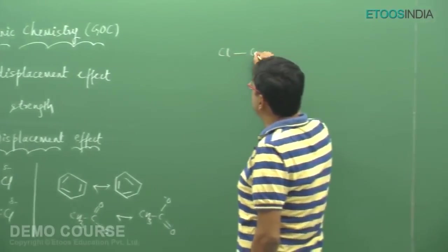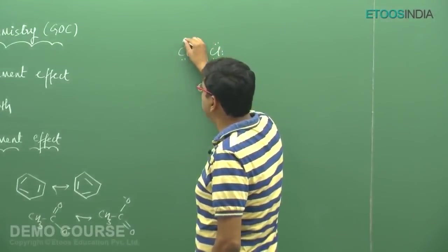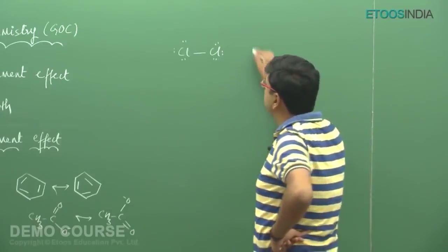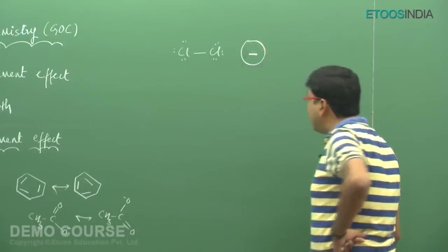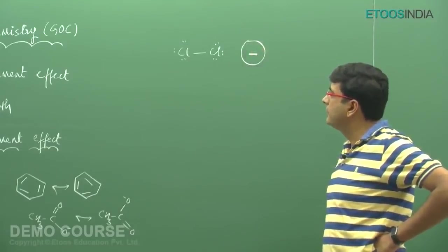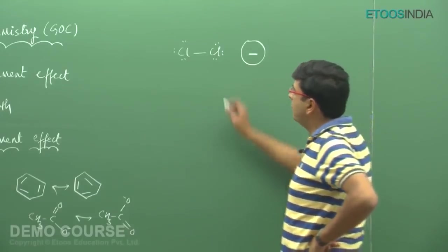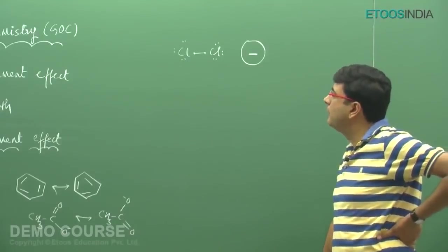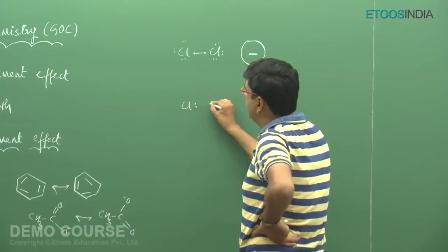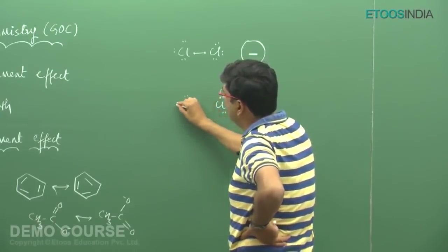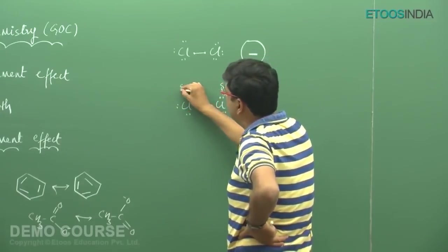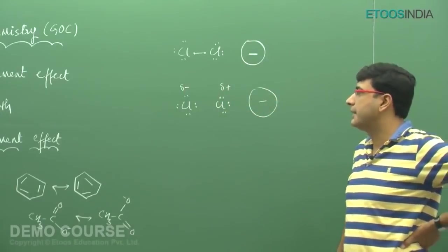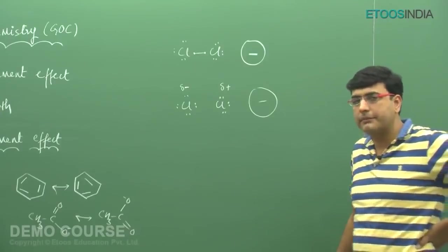If two identical atoms like chlorine are bonded to each other, with equal electronegativities, there will normally be no shifting of electrons. But if an anion is present in close proximity to the Cl₂ molecule, the shared electrons will readjust so as to induce a dipole. The atom nearer to the anion will develop a delta positive charge, and the atom farther from the negative charge will develop a delta negative charge. This provides extra attraction between the positive and negative charges — this is an induced dipole.